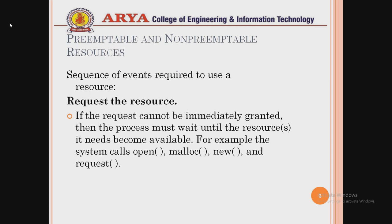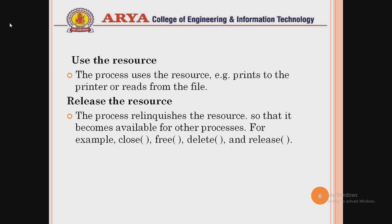Resources can be of two types: preemptable resources, which can be taken away from the CPU, and non-preemptable resources, which cannot be taken away. Resources follow a sequence of events. The first is request — if the request cannot be immediately granted, the process must wait until the resource is available. Examples include system calls like open, malloc, new, and request functions.